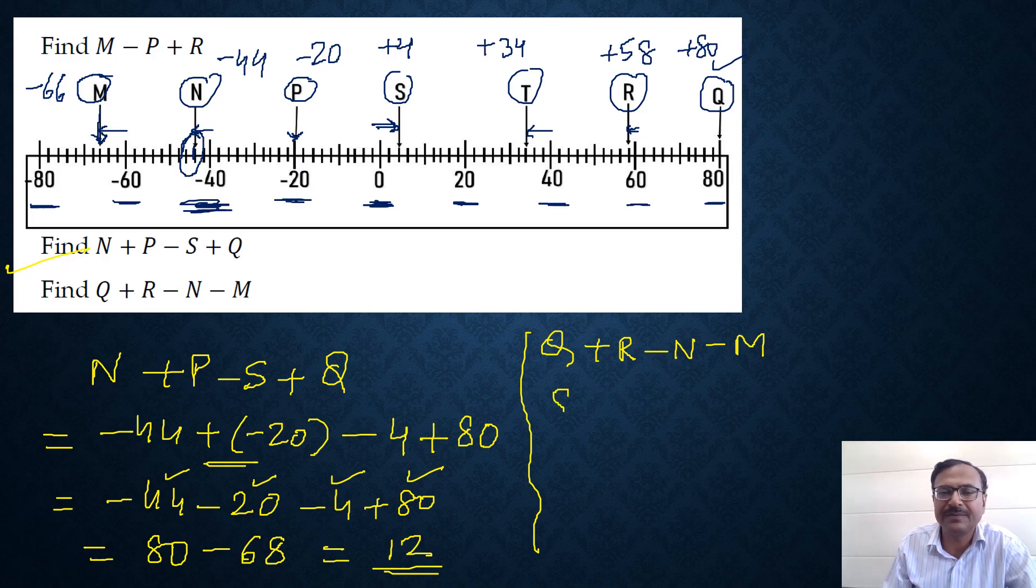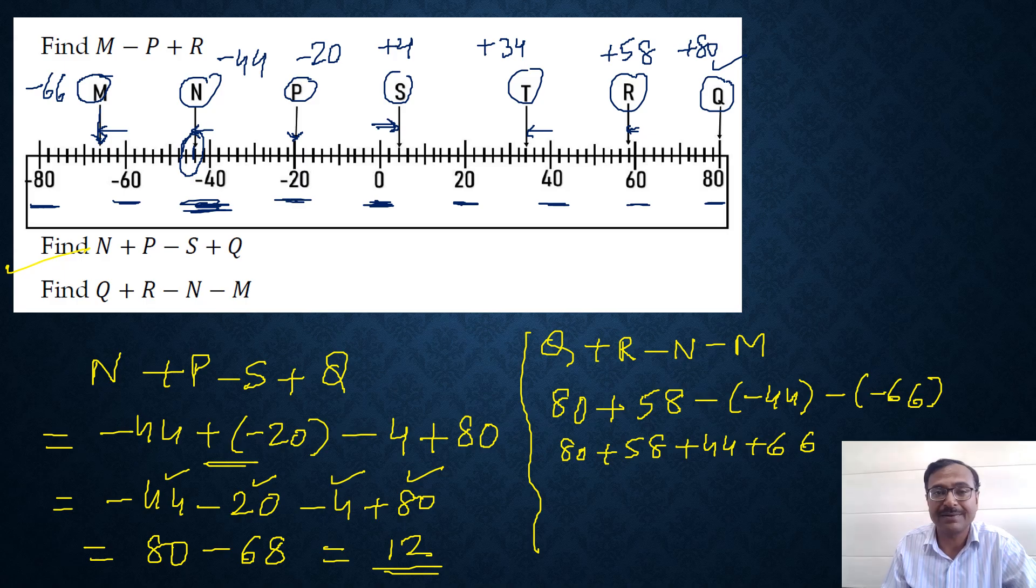Let us substitute all the values. Q is plus 80 plus R, which is plus 58, minus N, which is minus 44, minus M, which is minus 66. So 80 plus 58 plus 44 and plus 66. Everything converts to plus. You can just add all of them: 80, 130, 170, 230, 240, 248. Plus 248 is the answer of this particular question.